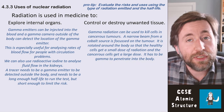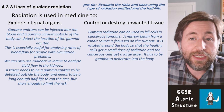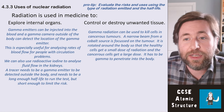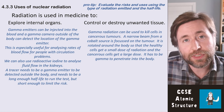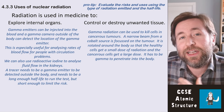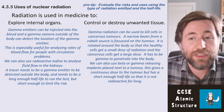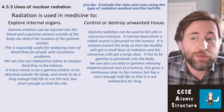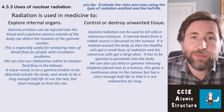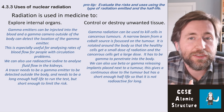Gamma radiation can be used to kill cells in cancers. We use a narrow beam from a cobalt source — a narrow beam of gamma rays — and we focus it on the tumor. It's then rotated around the body so that the tumor gets a really large dose and the healthy cells get a really small dose. It has to be gamma because it has to penetrate into the body, and it's just intense enough to cause enough ionization to cause damage.